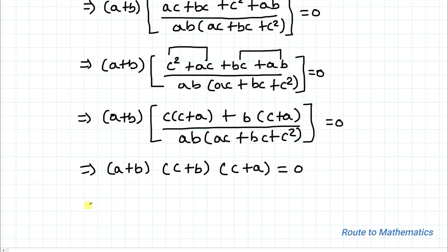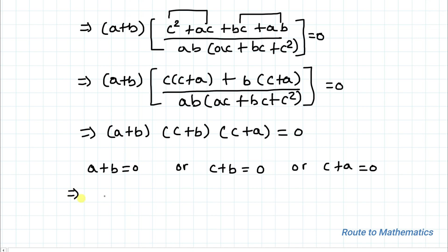So we can write (a+b)(b+c)(c+a) = 0. From here we can write: a+b = 0, or b+c = 0, or c+a = 0. This implies a = -b, or c = -b, or c = -a.